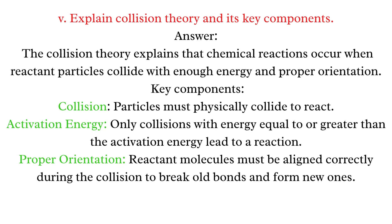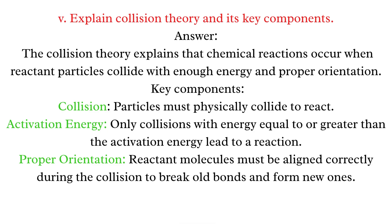Q5: Explain collision theory and its key components. Answer: The collision theory explains that chemical reactions occur when reactant particles collide with enough energy and proper orientation. Key components: Collision — particles must physically collide to react. Activation energy — only collisions with energy equal to or greater than the activation energy lead to a reaction. Proper orientation — reactant molecules must be aligned correctly during the collision.